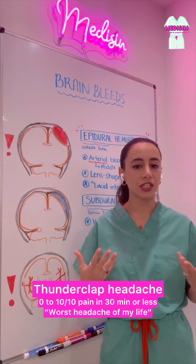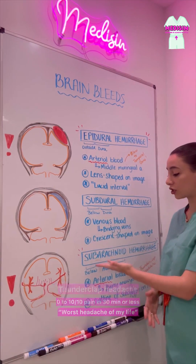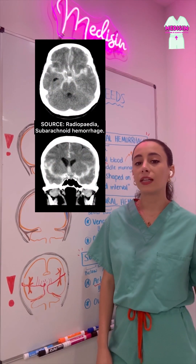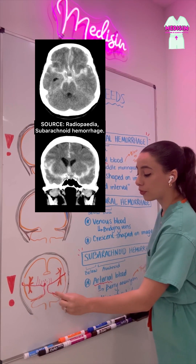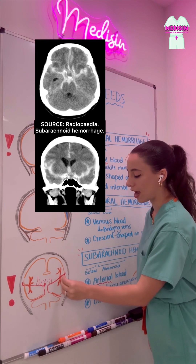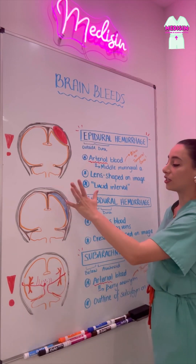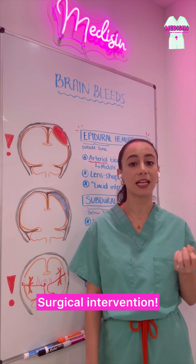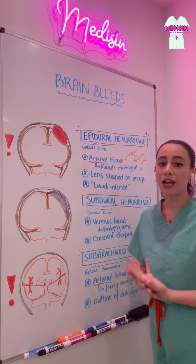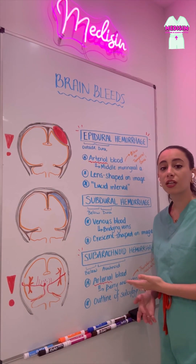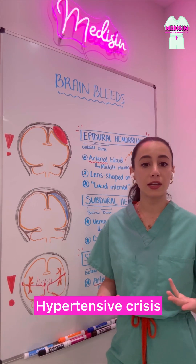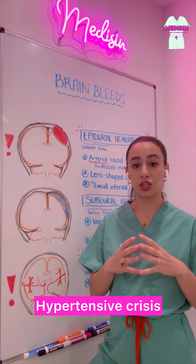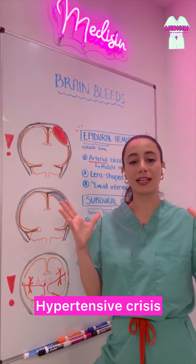So when we hear that history — worst headache of my life — we are concerned for subarachnoid hemorrhage. On a CT scan, we're going to see bright white because of the bleeding, but usually the bleeding is going to follow the sulci and gyri of the brain because the bleeding is located in the subarachnoid space. The shape is very different from subdural and epidural bleeds. Subarachnoid hemorrhages are emergencies and require immediate surgical intervention. These bleeds could be caused by trauma that might have caused an aneurysm to burst, but they're usually more associated with hypertensive crises — dramatically increased blood pressure that weakens the arterial walls and causes that aneurysm to rupture.